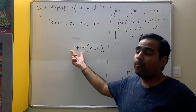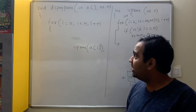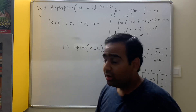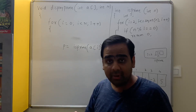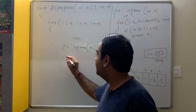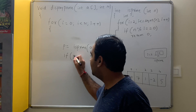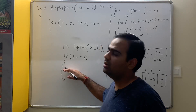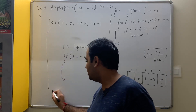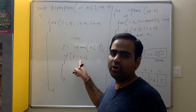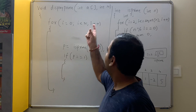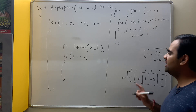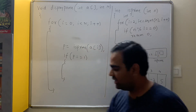We store the return value of is_prime in p. If p == 1, it is a prime number. For 10, p is 0, so 0 == 1 is false — do not execute the prime block. Then i++ makes i equal to 1, and we check a[1].